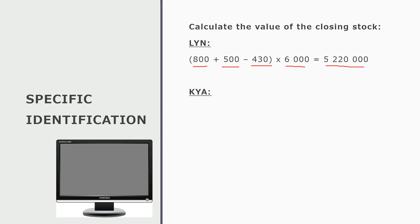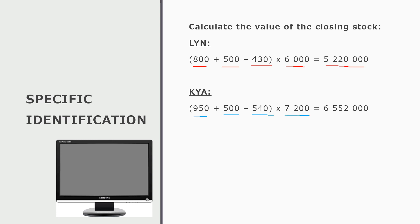For the Kia model, we do the same: all purchases added together — 950 units in the first month plus 500 in the second month — minus 540 units sold during the year. This gives us the units on hand at the end of the financial year. To get the value of that closing stock, we multiply by the cost per unit found on our original invoice from the very first purchase, giving us the value of the Kia models remaining in stock.